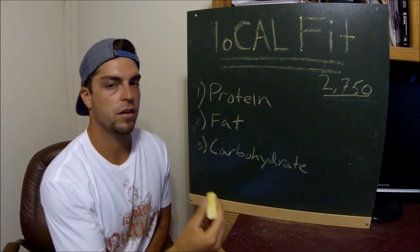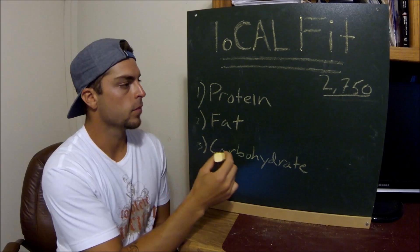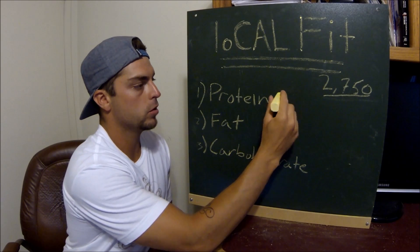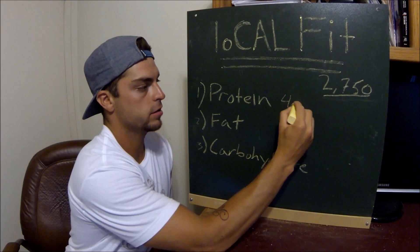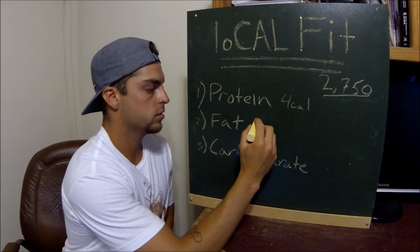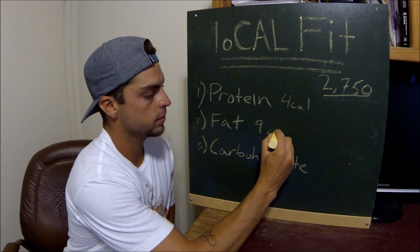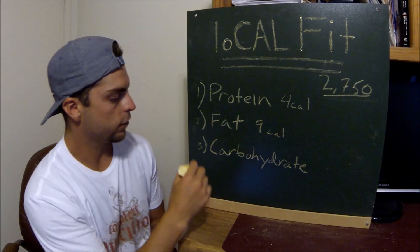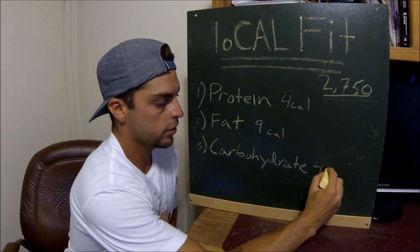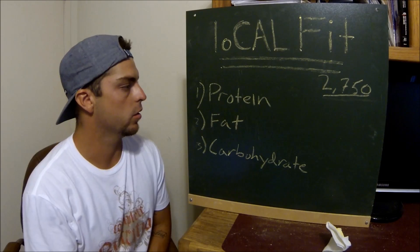Now that we know how many calories we need, we're going to divide that up into our macronutrients. Protein has 4 calories per gram, fat is more than twice as calorically dense at 9 calories per gram, and carbohydrates are the same as protein at 4 calories per gram.